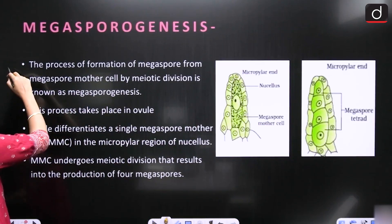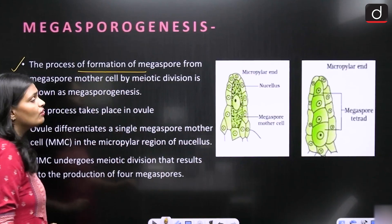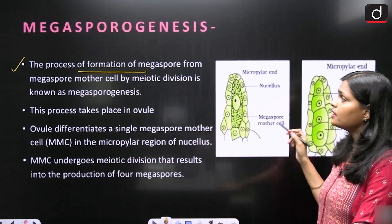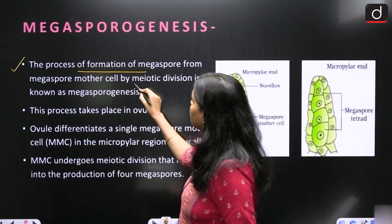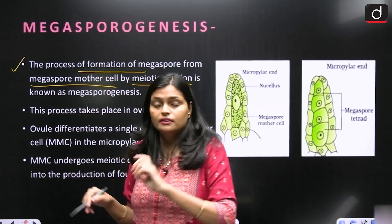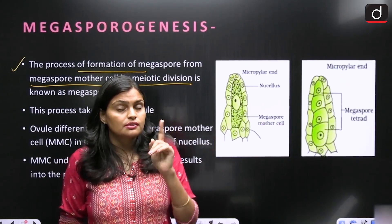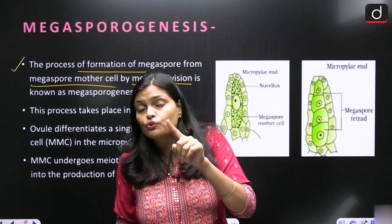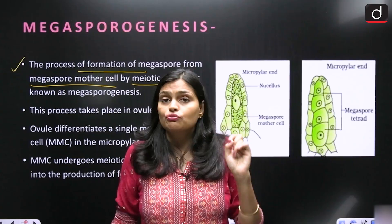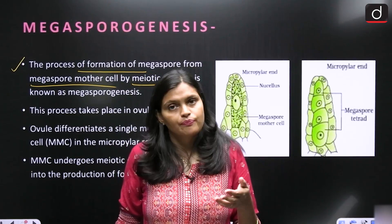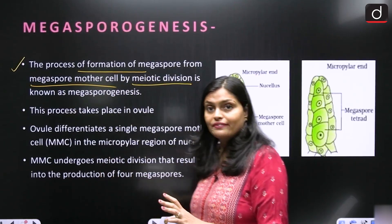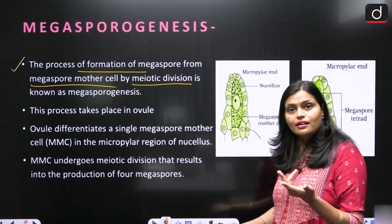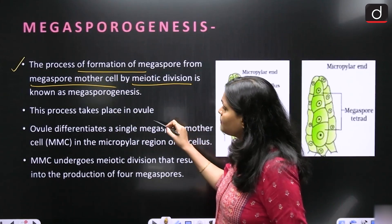Megasporogenesis is the process of formation of Megaspores from the Megaspore mother cell by meiotic division. Compare this with Microsporogenesis, which is also the formation of Microspores from Microspore mother cells through meiotic division. So whenever cells divide meiotically, you get Micro or Megaspores. This process takes place in the Ovule.